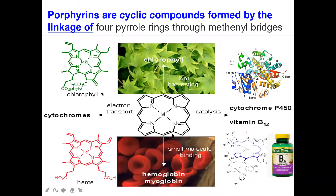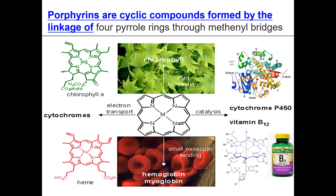Porphyrins are cyclic compounds formed by the linkage of four pyrrole rings through a methinyl bridge. A characteristic property of porphyrins is the formation of complexes with metal ions. Examples of natural metalloporphyrins are heme, chlorophyll, cytochrome, and methylcobalamin.